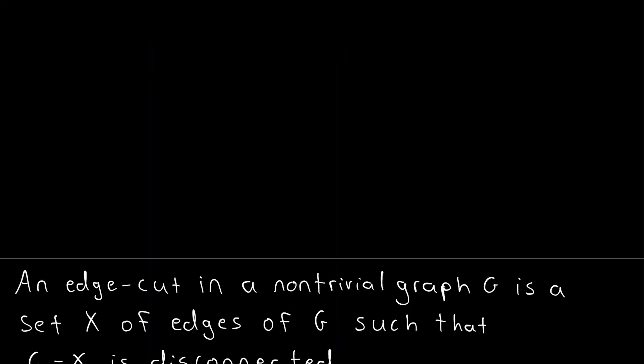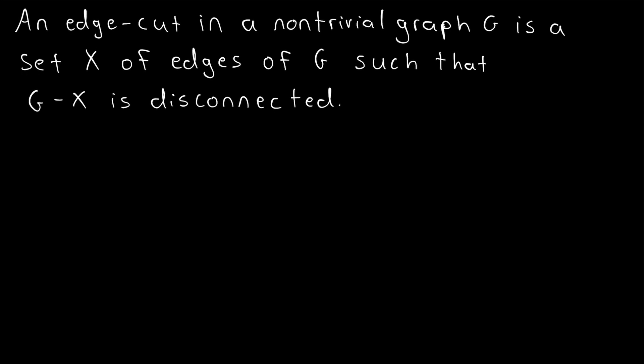Now that we've seen an example, let's quickly take a look at the definition written out. An edge cut in a non-trivial graph G is a set X of edges of G, such that G minus X is disconnected, just like we said. We specify non-trivial graph because if we've got a trivial graph, just one vertex and no edges, this is a connected graph that cannot be disconnected. So we cannot consider edge cuts in a trivial graph.